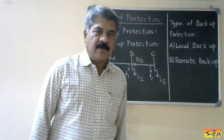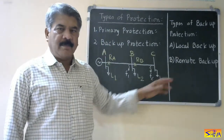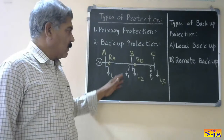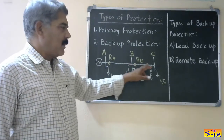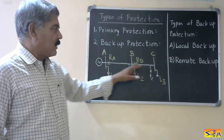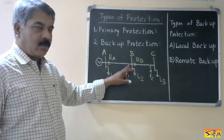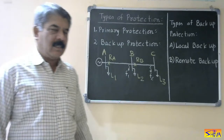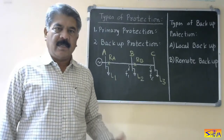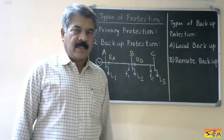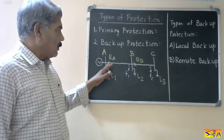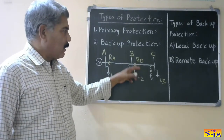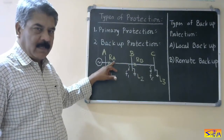The second type is remote backup protection. As the name indicates, it is not provided at the same location — it is provided somewhere else. In this case, R-B is acting as primary protection to section B-C, and R-A will act as backup protection to section B-C. R-A also acts as primary protection to section A-B and backup protection to section B-C. The advantage is that no additional cost is required to install the remote backup protection.